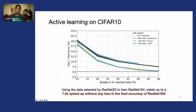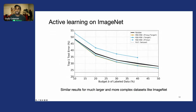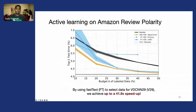We perform the same experiment on many other datasets. On ImageNet, we see very similar results for this larger, more complex dataset, using ResNet-18 to select data for a ResNet-50 model.